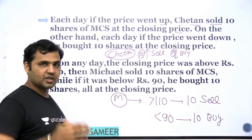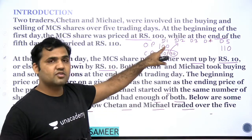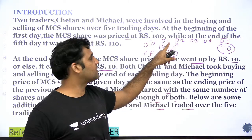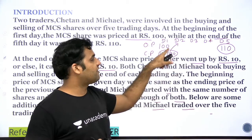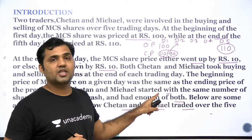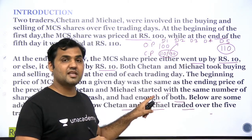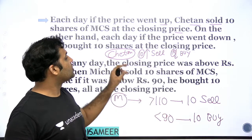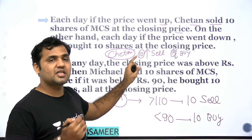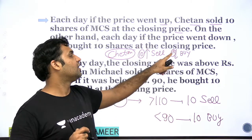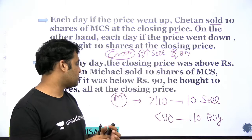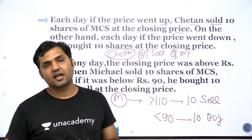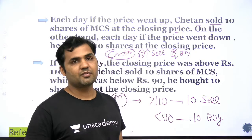So the five key points to keep in mind: the opening price on Day 1 is rupees 100; the closing price on Day 5 is rupees 110; every day the price goes up by 10 or down by 10; both Chetan and Michael make their decisions based on the closing price each day; Chetan sells 10 if price goes up, buys 10 if price goes down; Michael sells 10 if price is above 110, buys 10 if price is below 90.